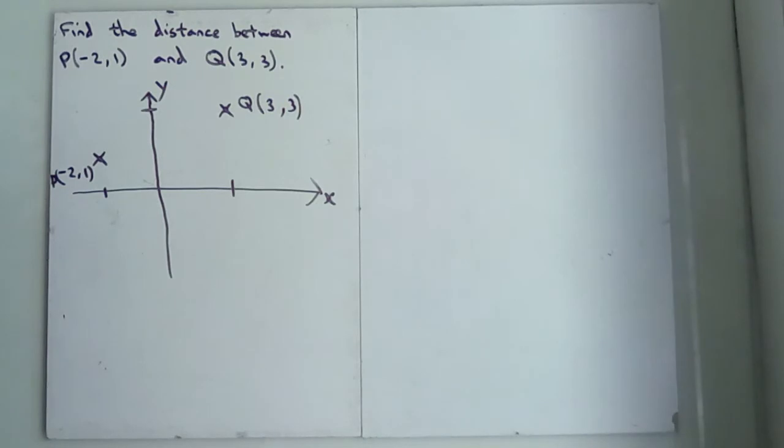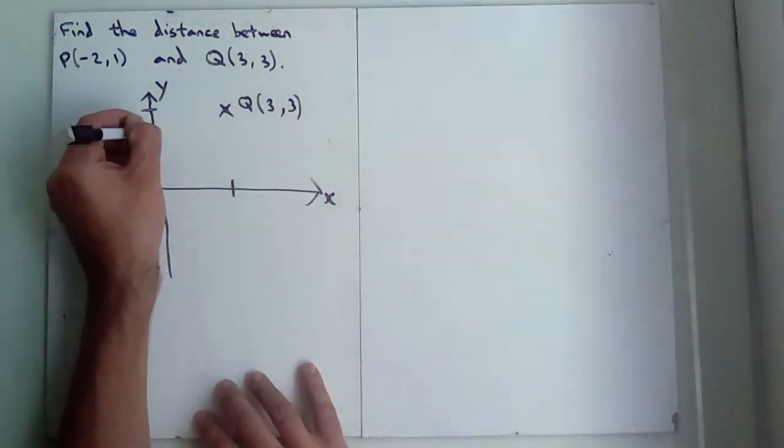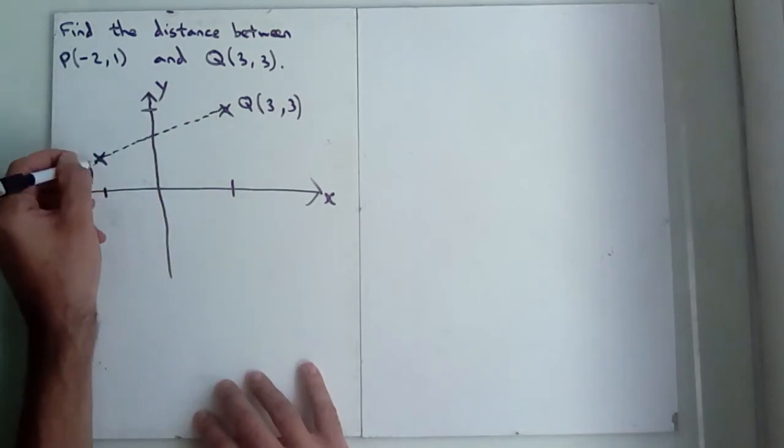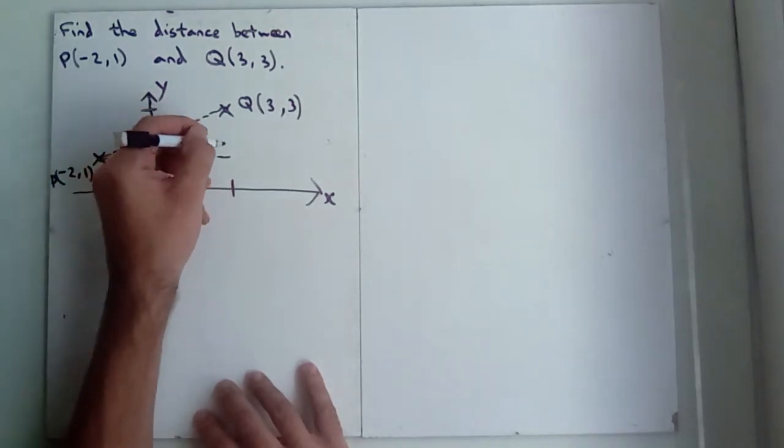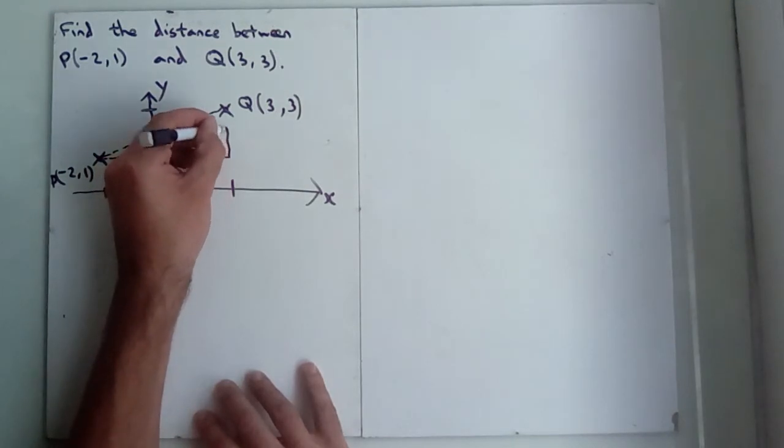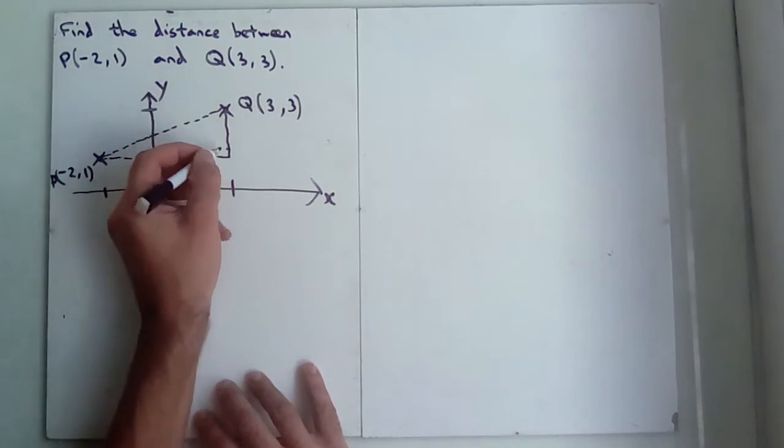So what we're going to do here, we are going to make a right-angled triangle. So I'm going to join these with a line, straight as I can do. And then I'm going to draw the horizontal line between the two. And I'm going to draw the vertical line.